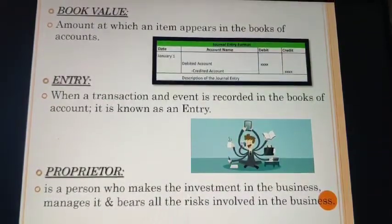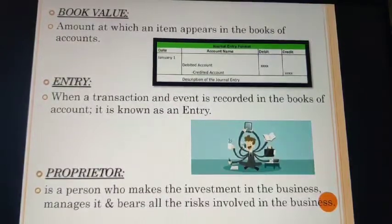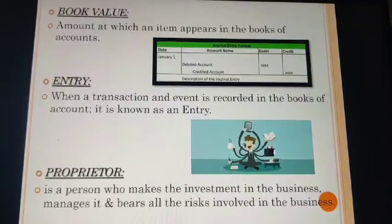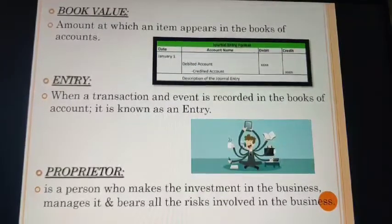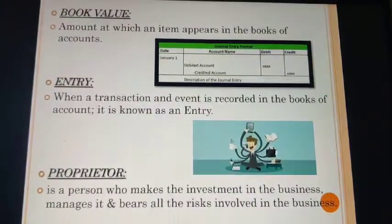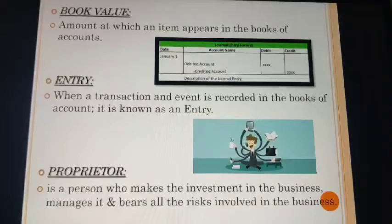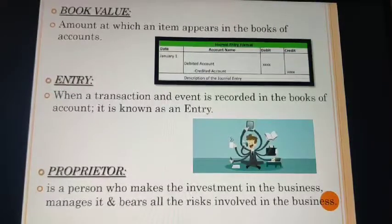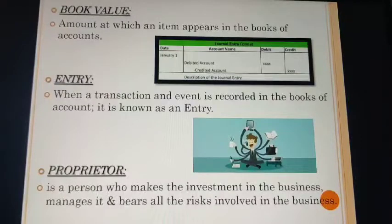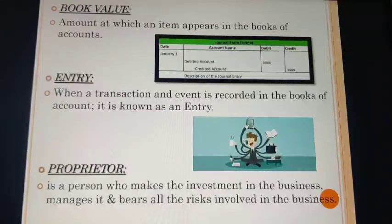Next is entry. When a transaction or event is recorded in the books of account it is known as an entry. Any transaction or event of a financial nature, when we record it in our books of account, becomes our entry. As discussed, any entry to be recorded is done in the journal. You can see in this picture we have a journal entry format where one column represents date, another represents account name, and columns for debit and credit. One account is debited, another is credited, and below that there is a description of the journal entry.